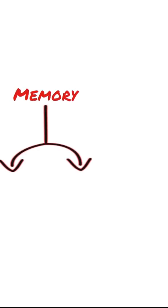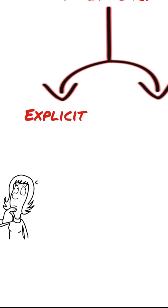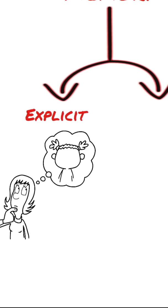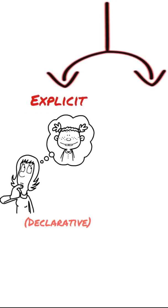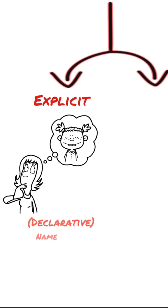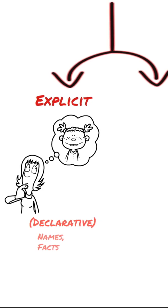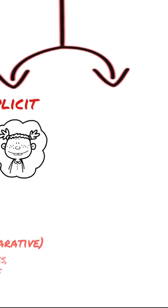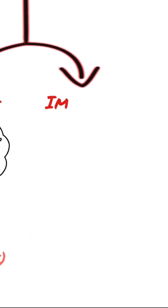Explicit memory is declarative memory — you can declare that you remember something. You can consciously recall this information. Those are explicit memories, such as names and facts. Like if you know someone's name, you can say, I know that person's name.